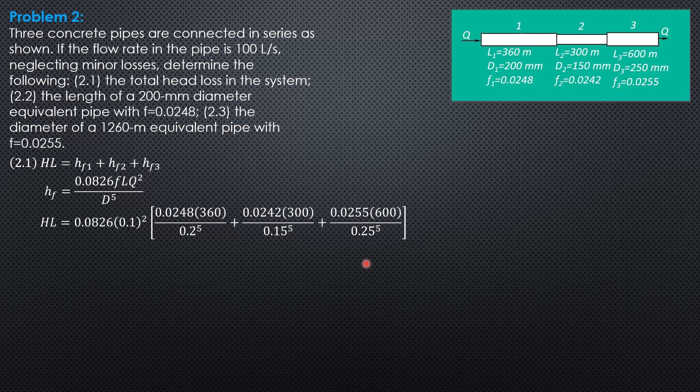So using the calculator, the head loss is 115 meters. Then the length of a 200 mm diameter equivalent pipe with friction factor 0.0248.